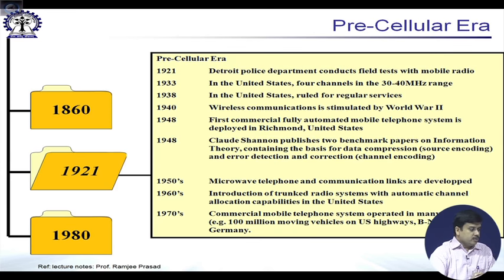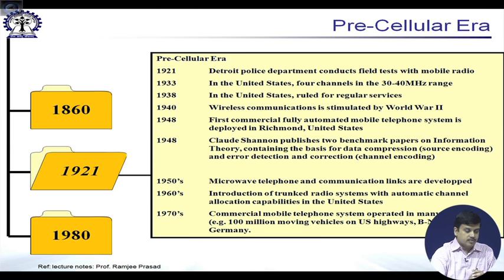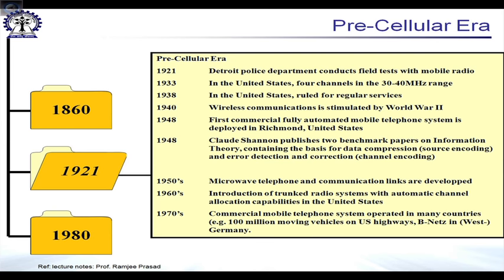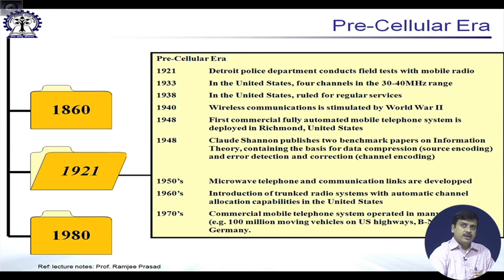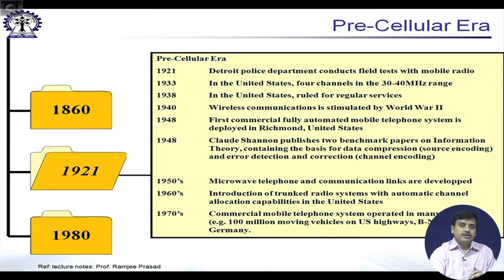Moving on to the 1921 era — the second, precellular era — we see initial deployments for homeland security, used by police departments. In that period there was widespread use of car mobiles, however these were not connected to the public switched telephone network. These networks operated independently with problems regarding handoff and limited coverage. Around 1940, during World War Two, there was huge stimulus to radio communications and great growth in development of handheld devices using semiconductor transistors.